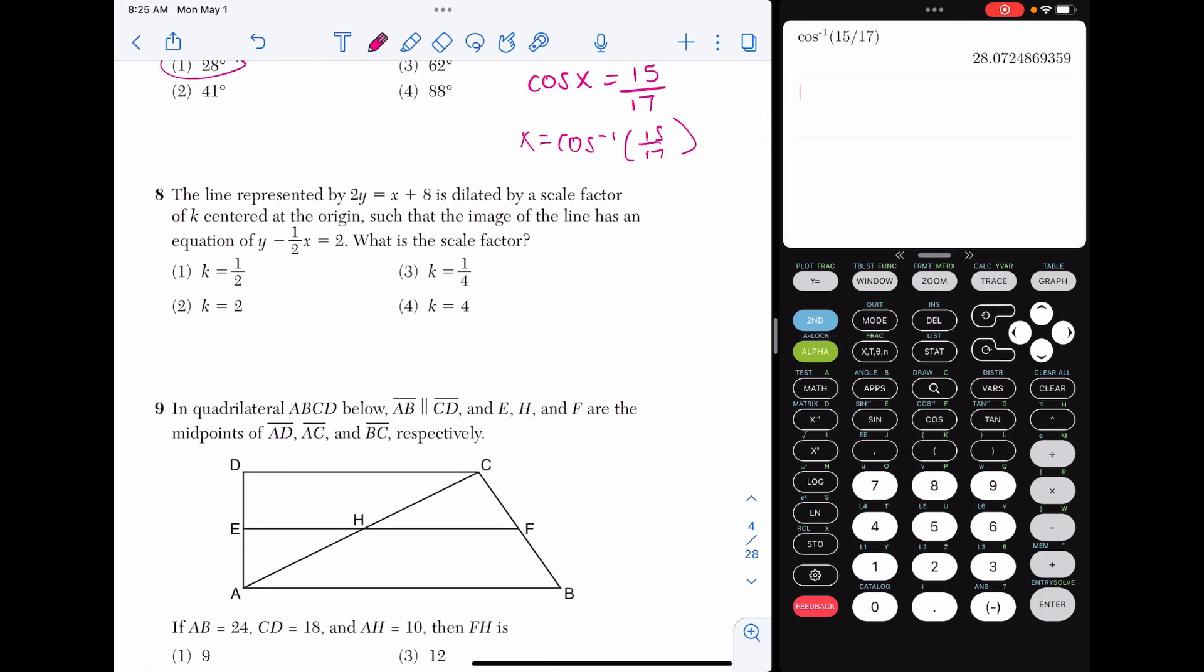Number eight, the line represented by 2Y equals X plus 8 is dilated by a scale factor K centered at the origin. The image is Y minus one half X equals 2. What is the scale factor? The first problem I see here is that neither of these equations is in Y equals form. So let's start with the pre-image 2Y equals X plus 8. If I divide everything by 2, I get Y equals one half X plus 4. So this is my pre-image.